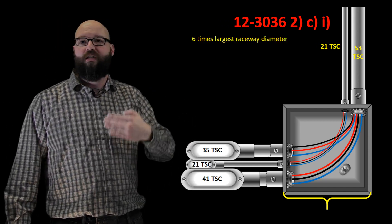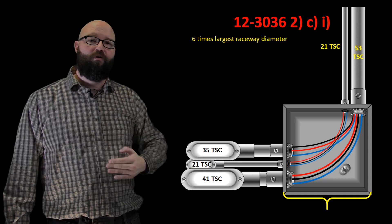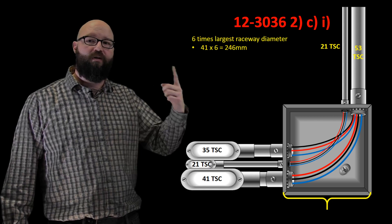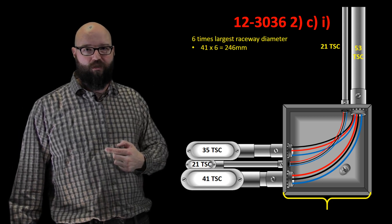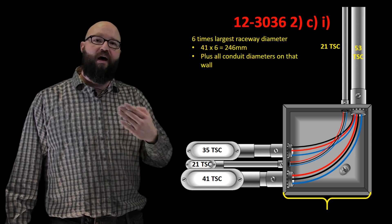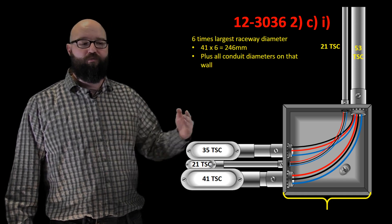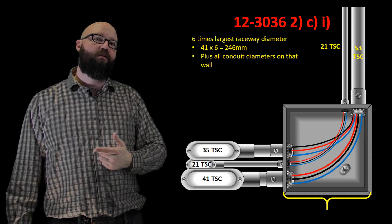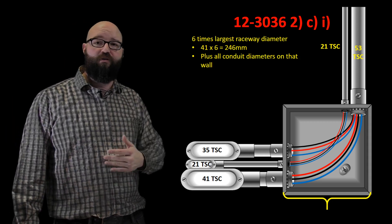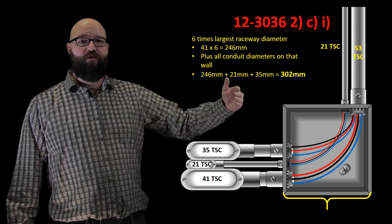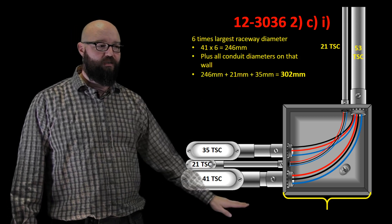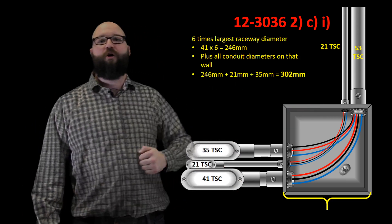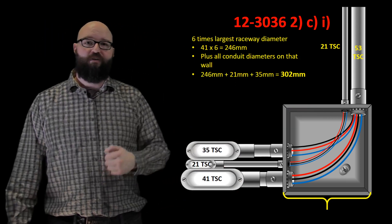Which in this case we have our 41 times six gives us 246 millimeters. Then what we're gonna do is add to that the rest of the diameters from our other raceways on this wall. We have our 21 and our 35 trade size on there as well. If we add those on to the 246, we end up with a total of 302 millimeters. That's the minimum distance to observe that we have the proper distance to the opposite wall there. So that's one dimension.